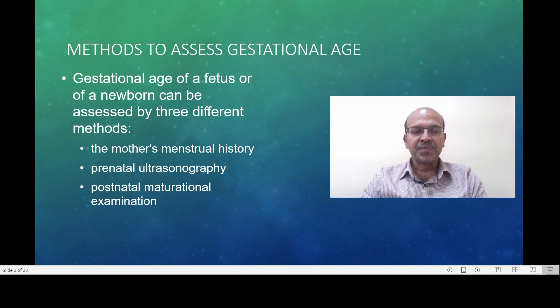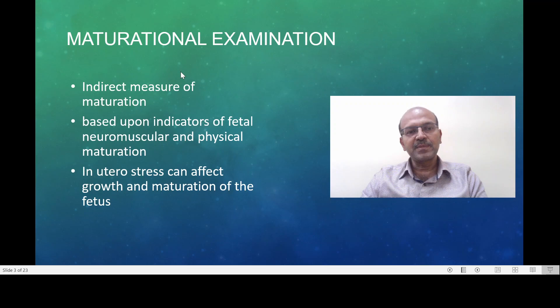So the measurements have a variation of plus or minus 2 weeks after this period. The postnatal maturation examination is used to corroborate the above and this also has inaccuracies. It may be related to accelerated maturation of the fetus due to stress in utero. There are many tools, the most commonly used one is a modified Ballard score.